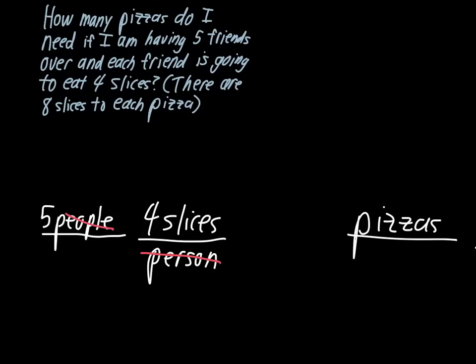Those two have to be opposites, and they've got to cross off from one another. The next piece of information in the problem tells us there's eight slices to each pizza. This is good. Pizza is the unit that we're trying to end with. So we'll put pizza on the top here, since we need to end with pizzas, because one pizza has eight slices. Now we can cross out slices.